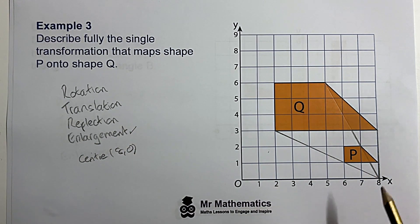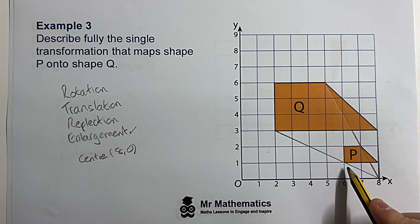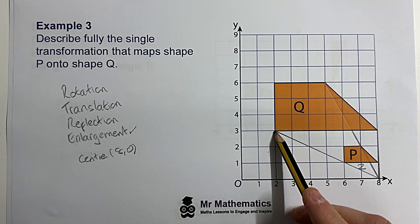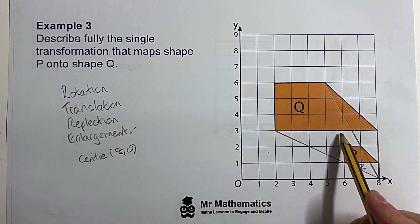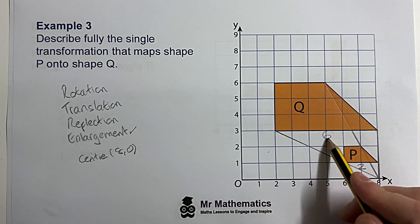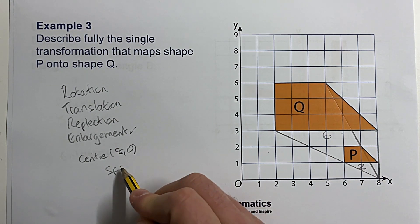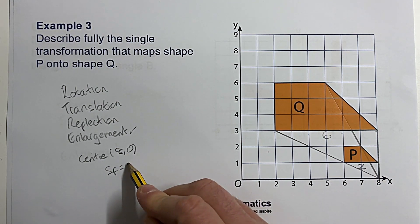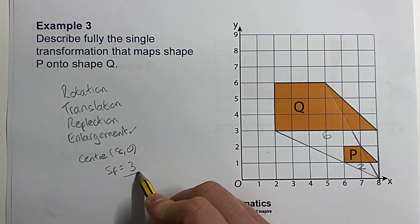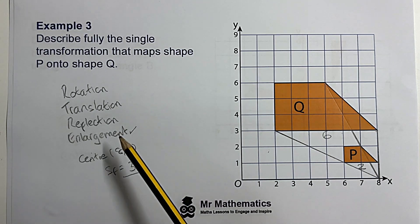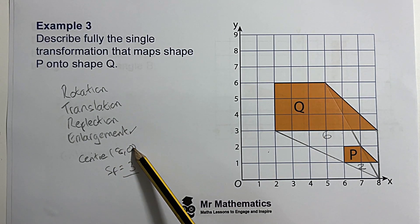Now we need the scale factor. The base of P is two and the base of Q is six, so the scale factor is three — two times three makes six. On the exam you get three marks: one for enlargement, one for center, one for scale factor.